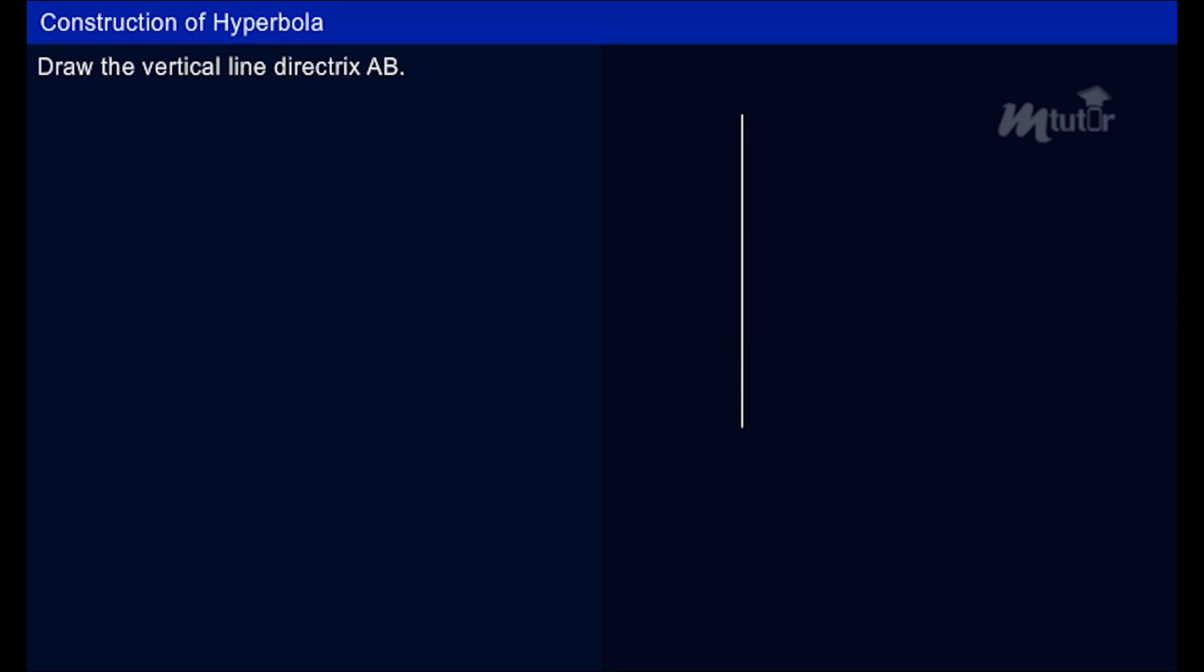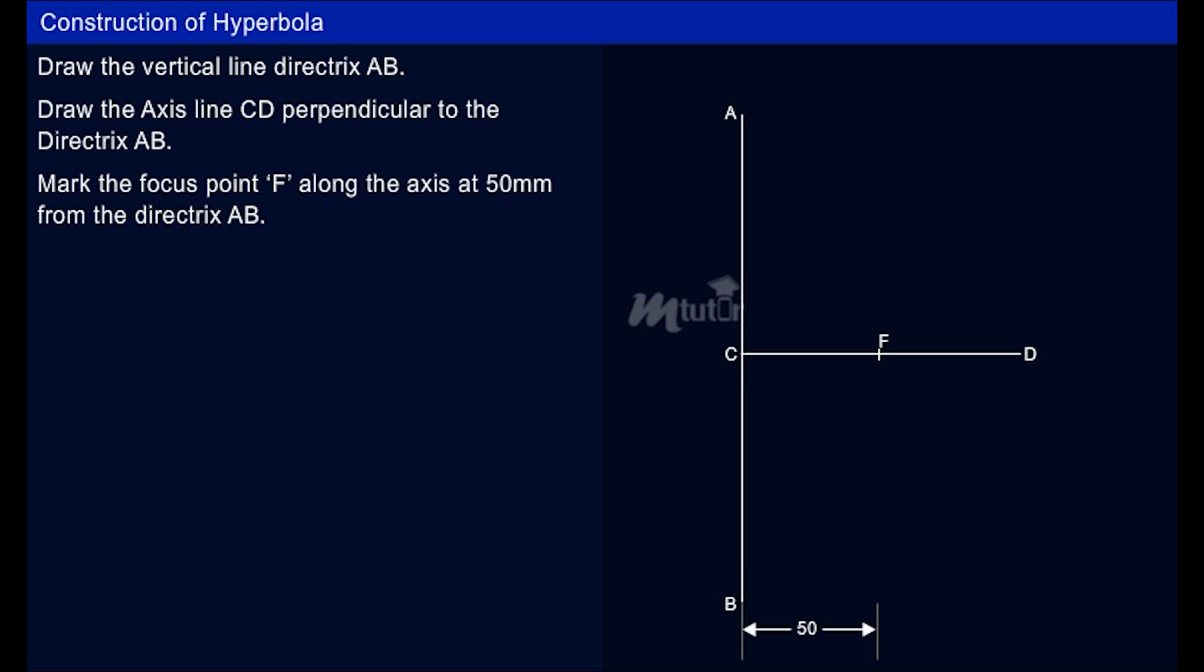Draw the vertical line directrix AB. Draw the axis line CD perpendicular to the directrix AB. Mark the focus point F along the axis at 50mm from the directrix AB.